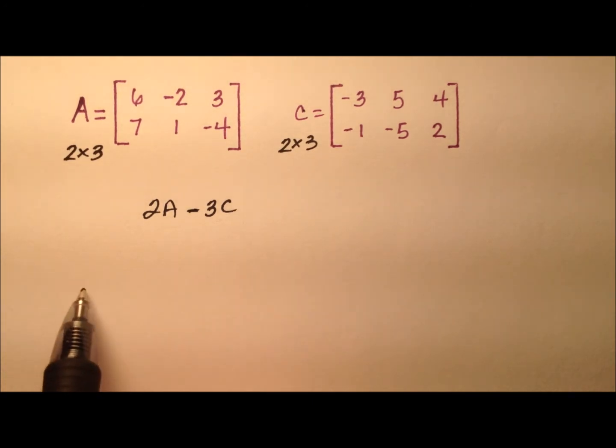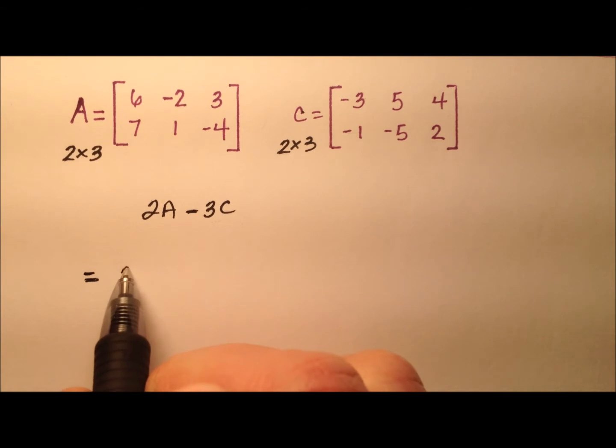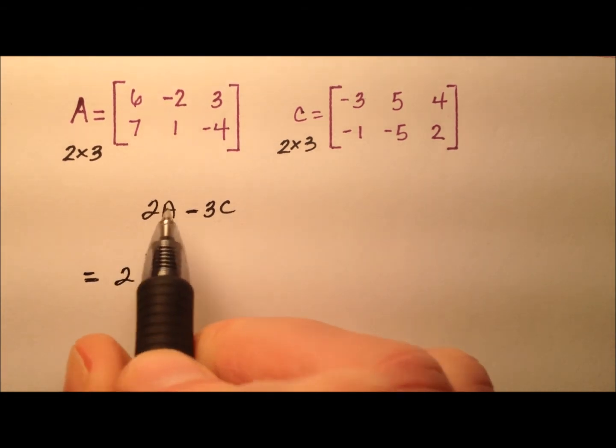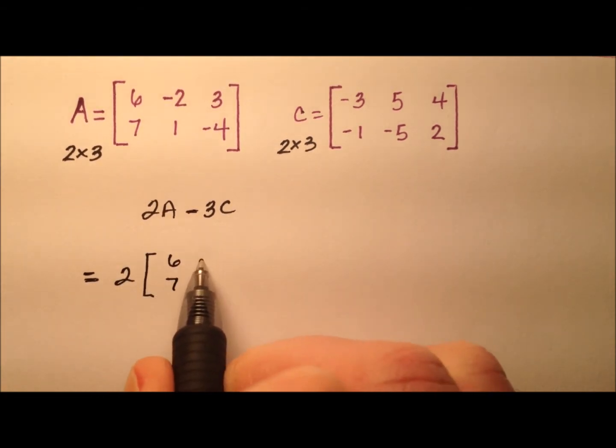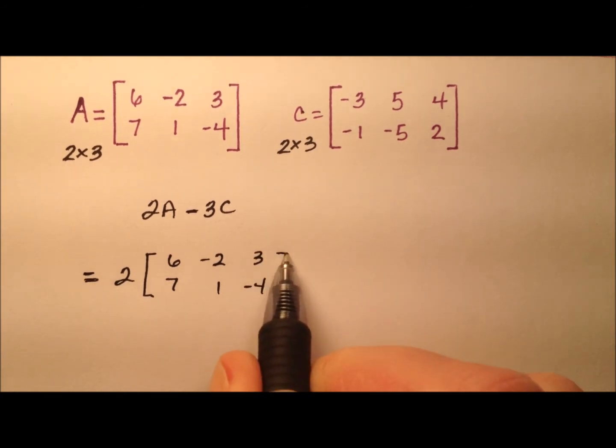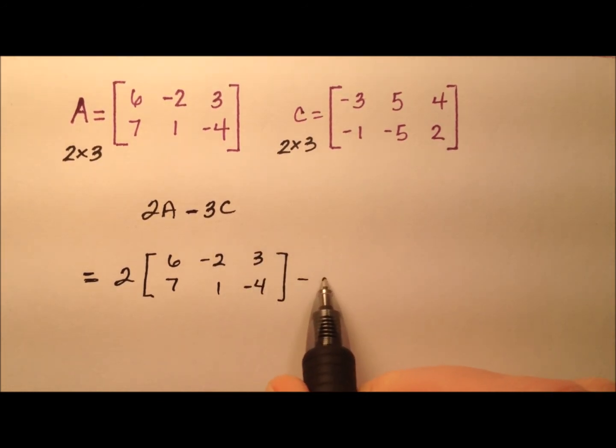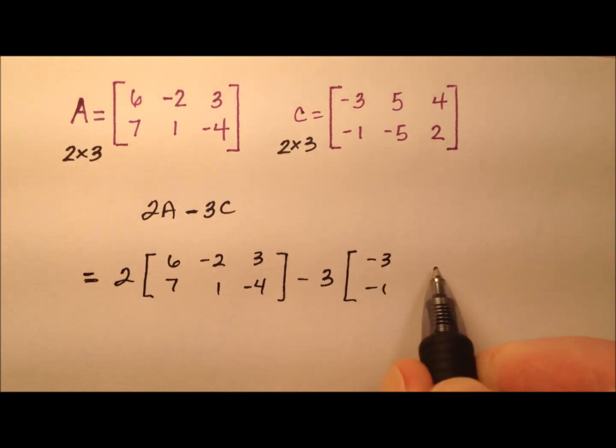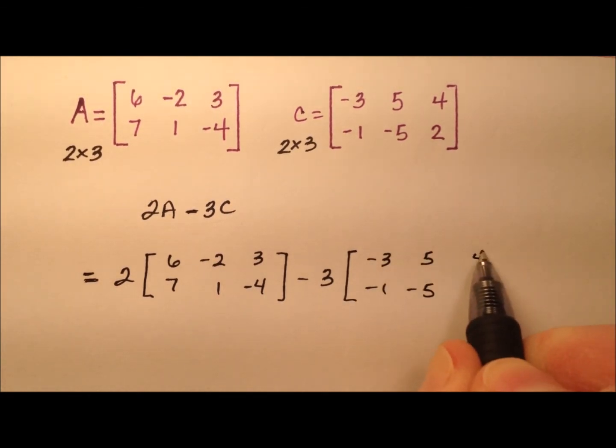So, let's go ahead and do this. We're going to take 2 times this A matrix, which has these 6 entries in it, and from that we'll subtract 3 times this C matrix, which has these 6 entries.